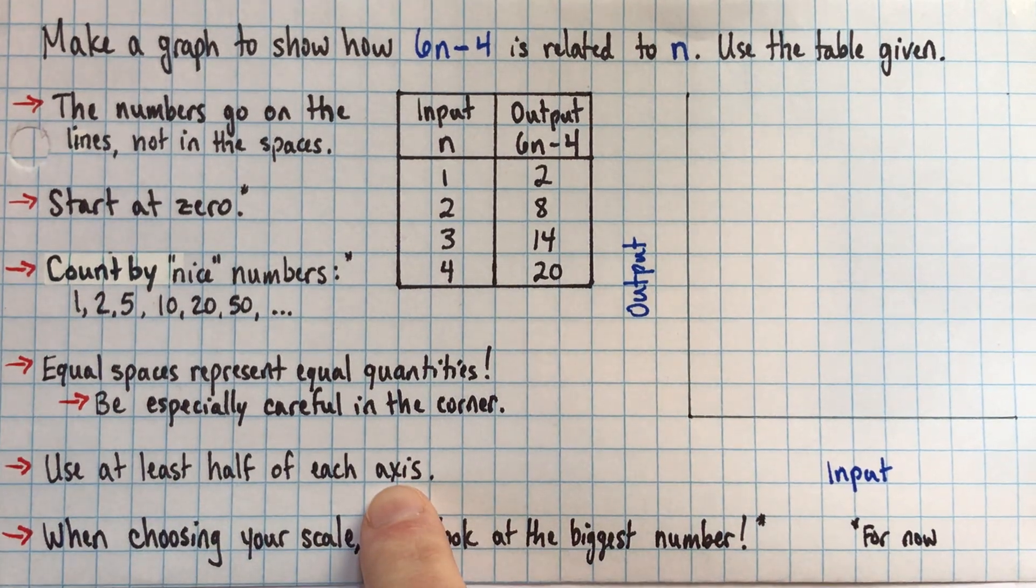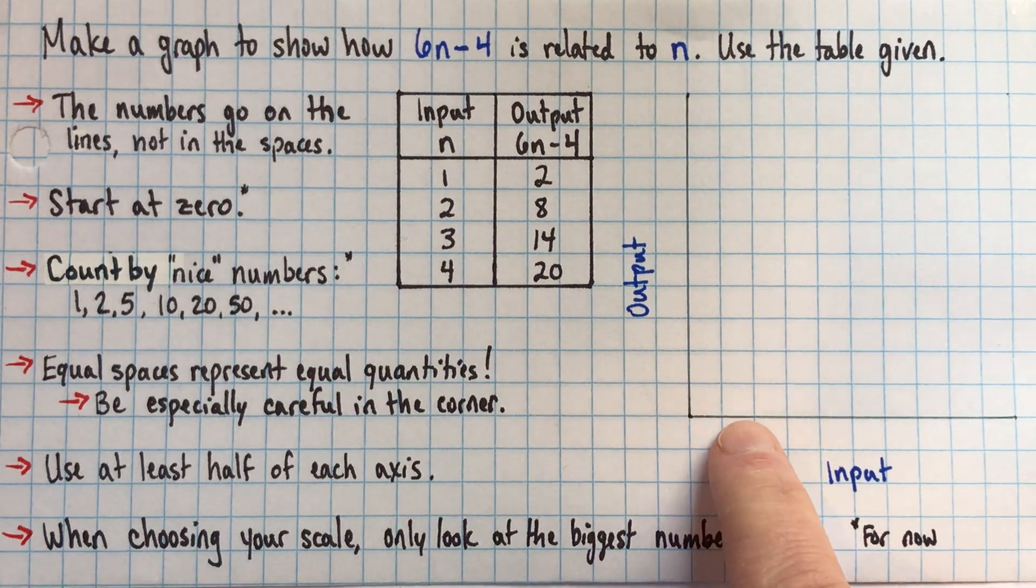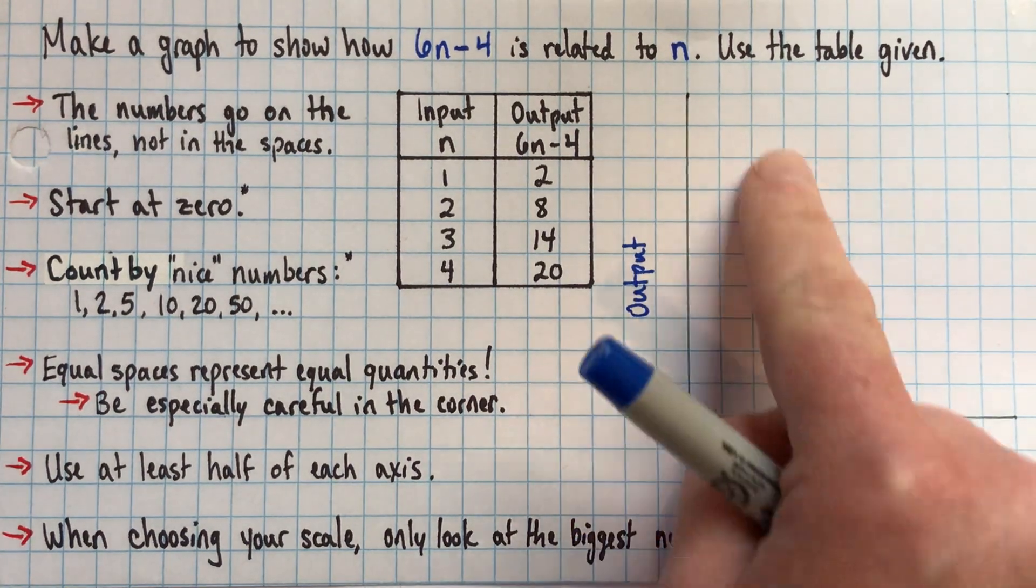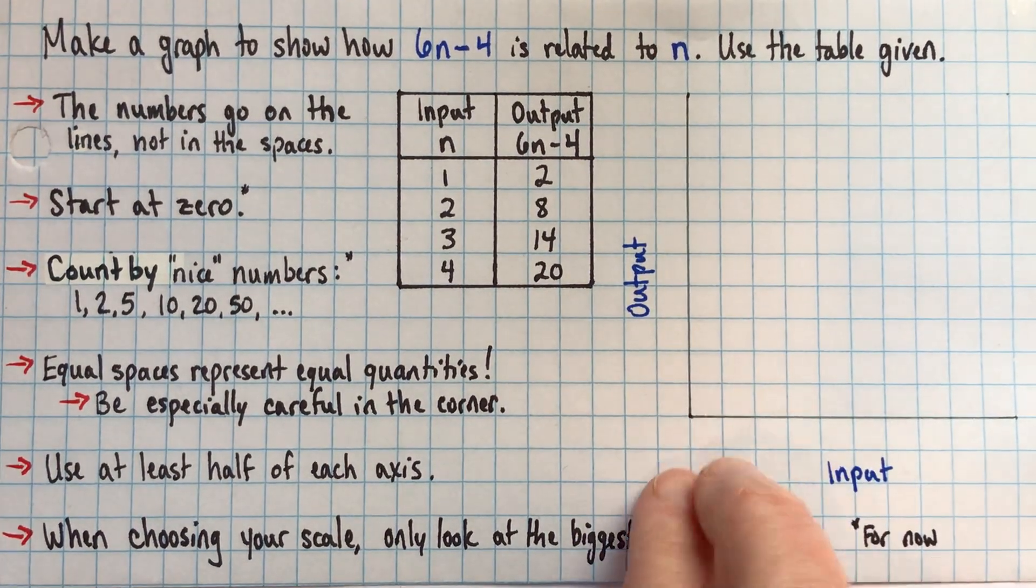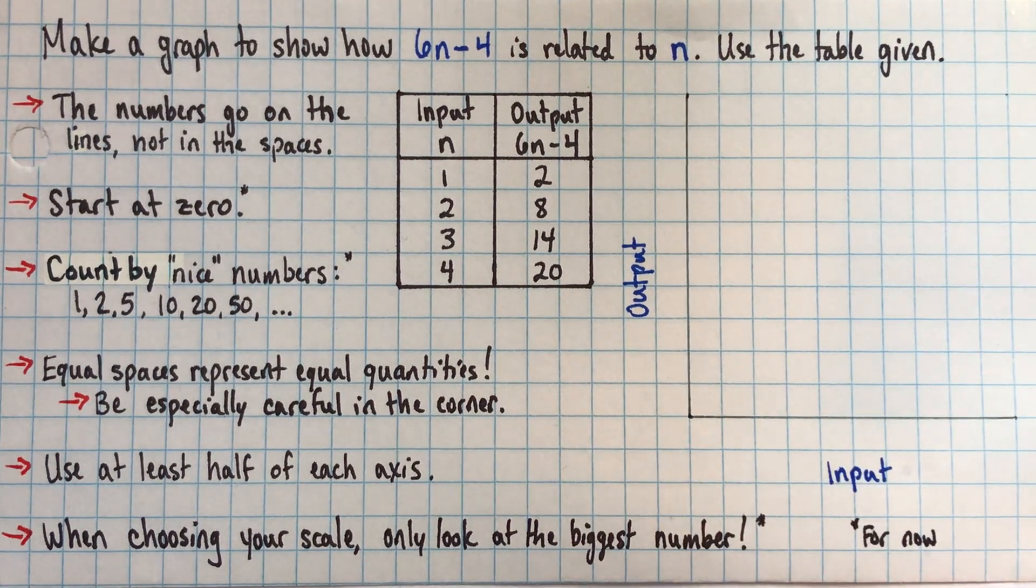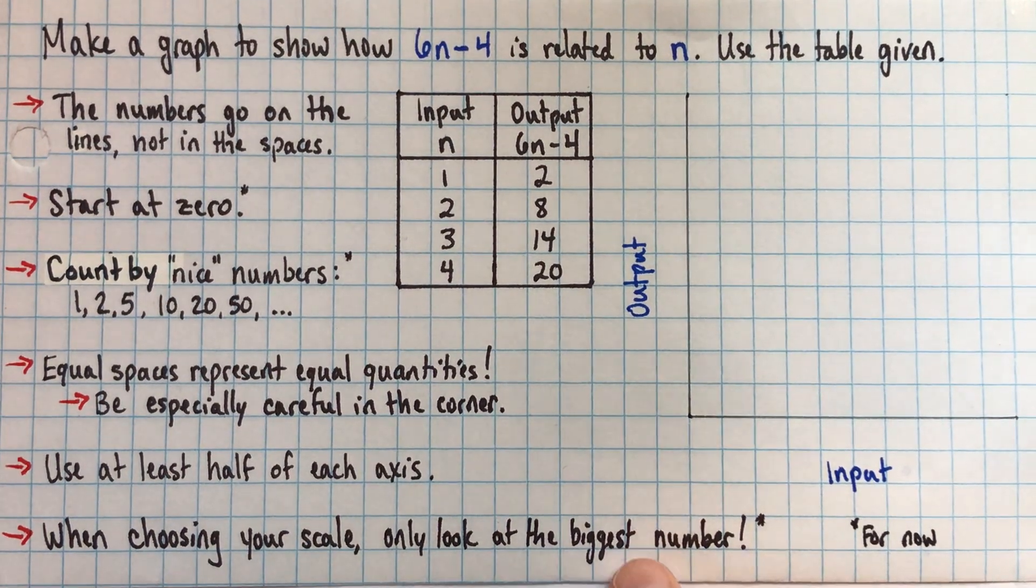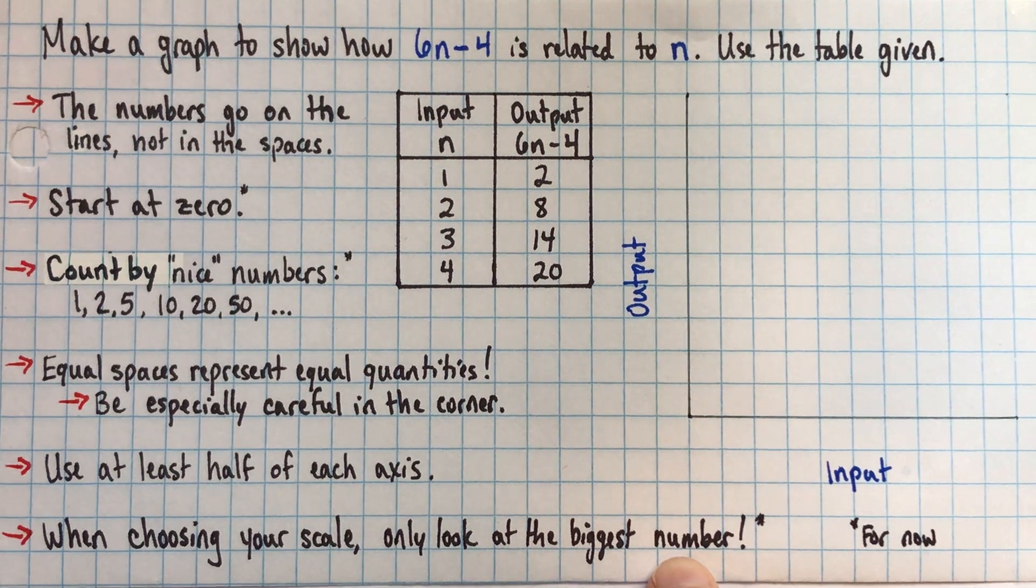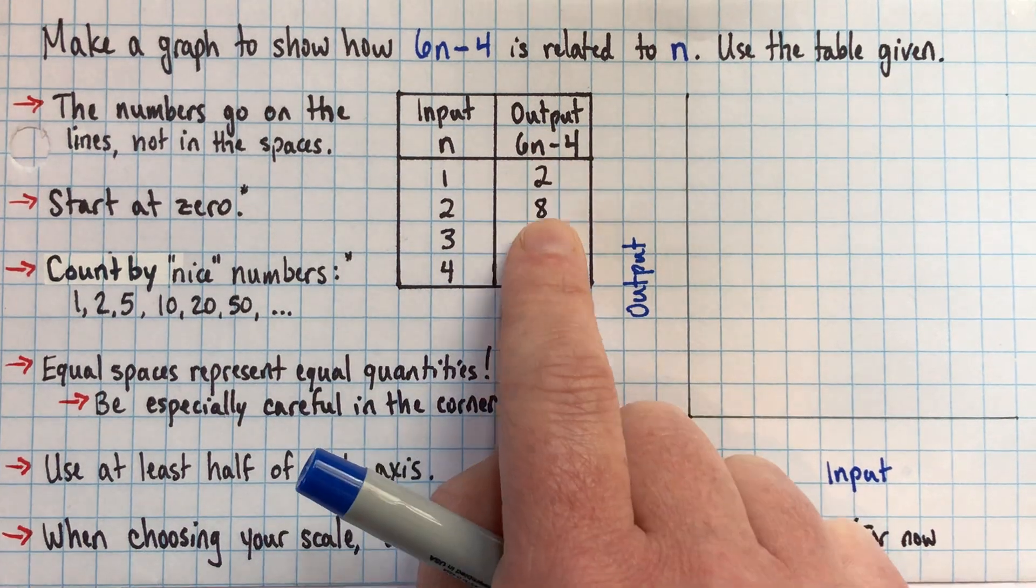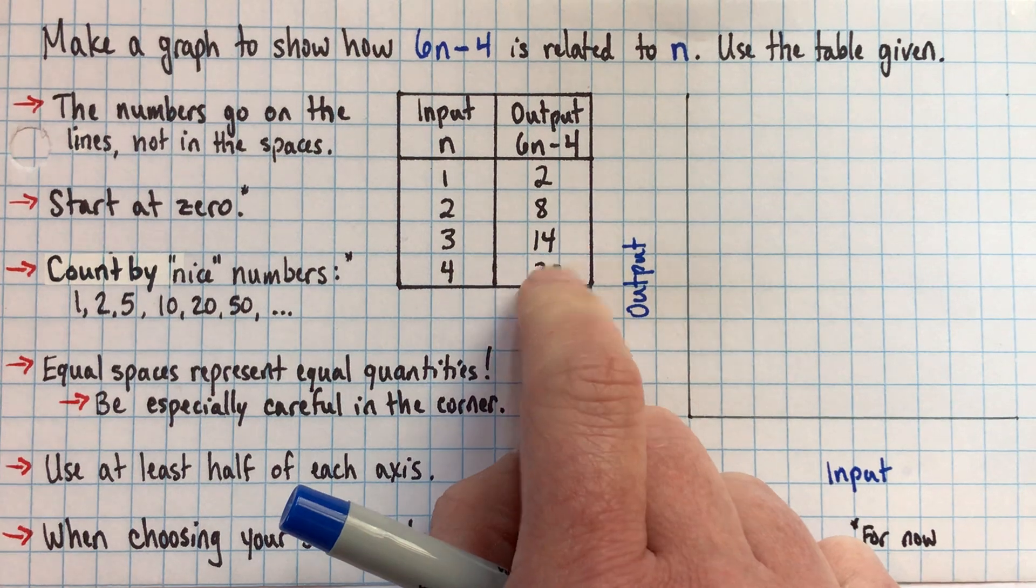Use at least half of each axis. If you look here at my input, it just goes 1, 2, 3, 4. If I put the numbers 1, 2, 3, 4, my whole graph would be squished into just this left part of the graph here. It would be kind of hard to read and small. So I tell my students, use at least half, somewhere between half and the whole thing. And then here's another tip. When you choose your scale, you actually only need to look at the biggest number. Just a side note, if you've got negative numbers, you need to look at the biggest and smallest number. But for example, here when we're looking at the outputs, we don't need to pay any attention to the 2 or the 8 or the 14 when we're choosing our scale. We only need to look at that 20.